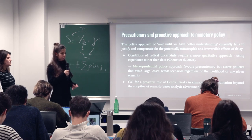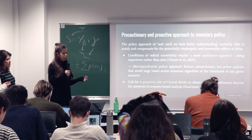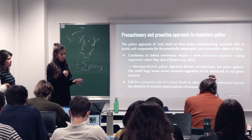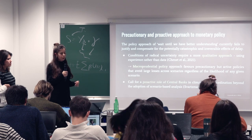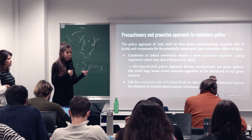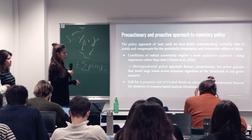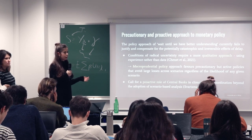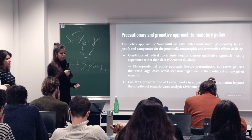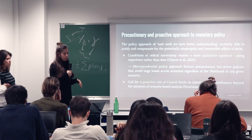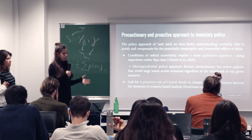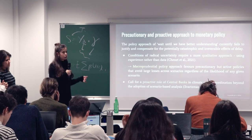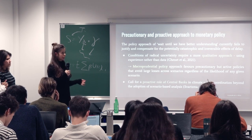As advocated by Janet et al. in 2021, they call for a macroprudential policy approach that favors precautionary but active policies that avoid large-loss scenarios regardless of the likelihood of any given scenario. Swartzmal et al. in 2021 also call for a proactive role of central banks in climate policy coordination beyond the adoption of scenario-based analysis.